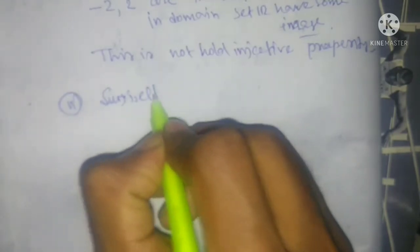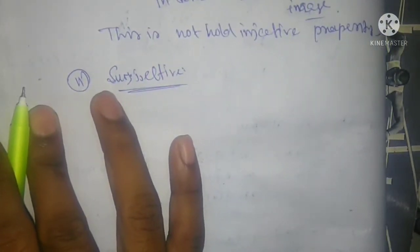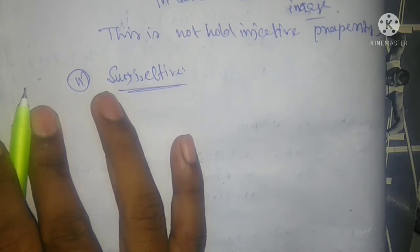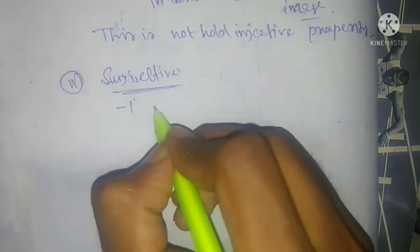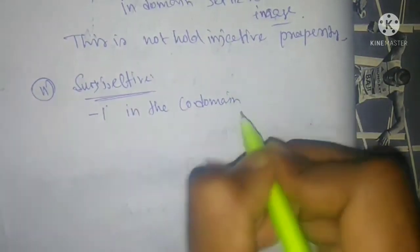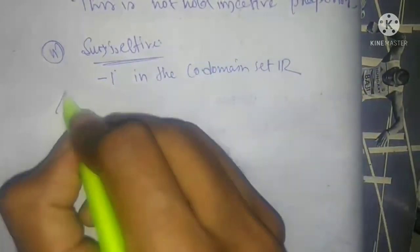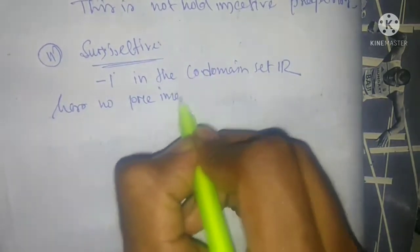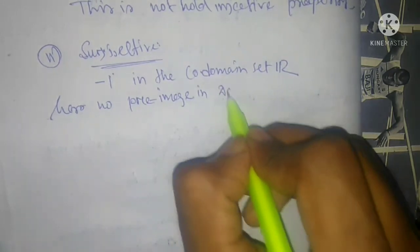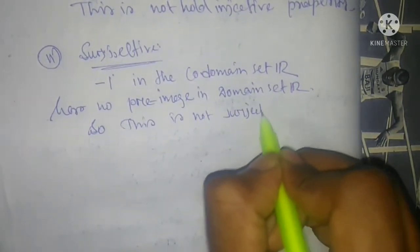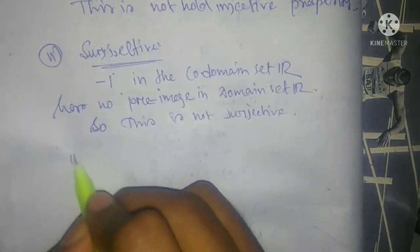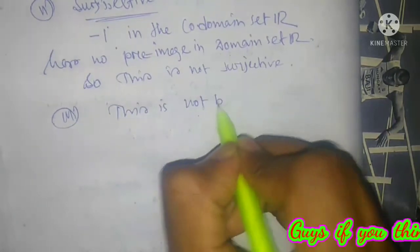This mapping is also not surjective, because −1 in the codomain ℝ has no pre-image in the domain ℝ — since x² ≥ 0 for all real x, no real number maps to a negative value. So f(x) = x² is not surjective. Since it is neither injective nor surjective, it is also not bijective.